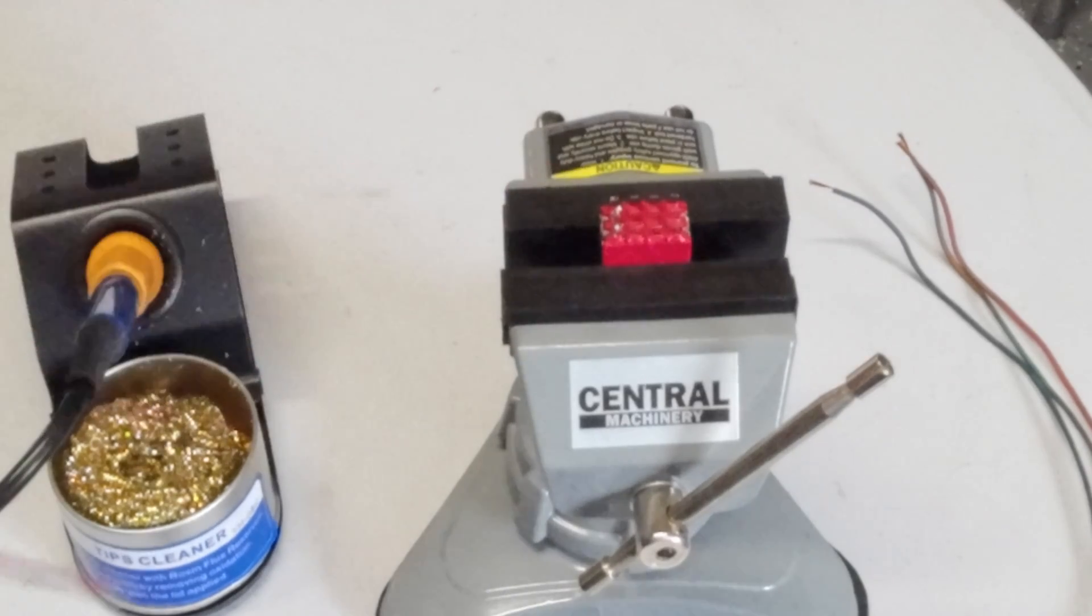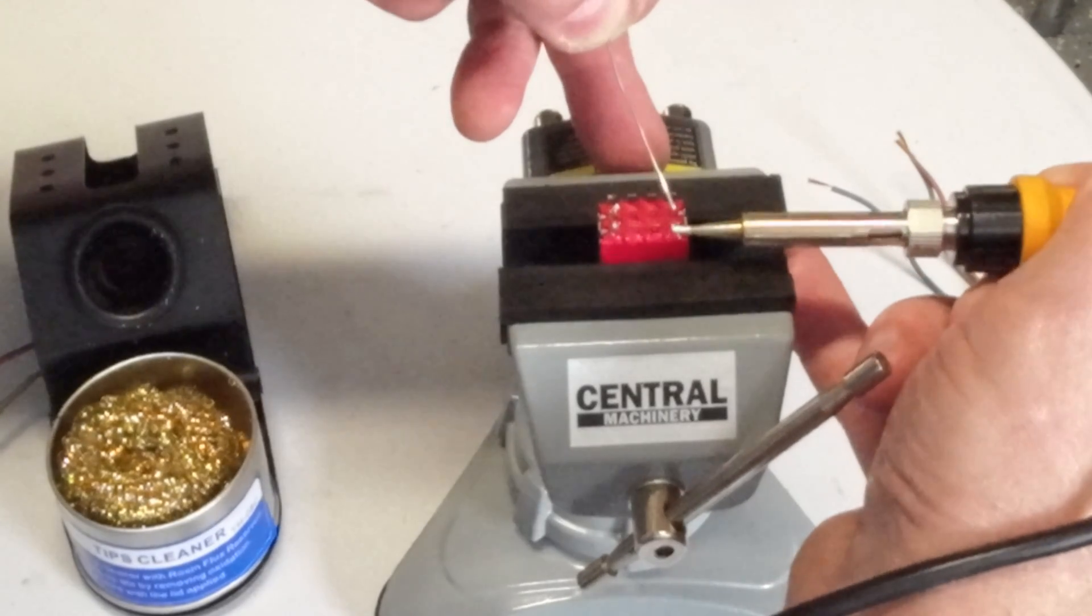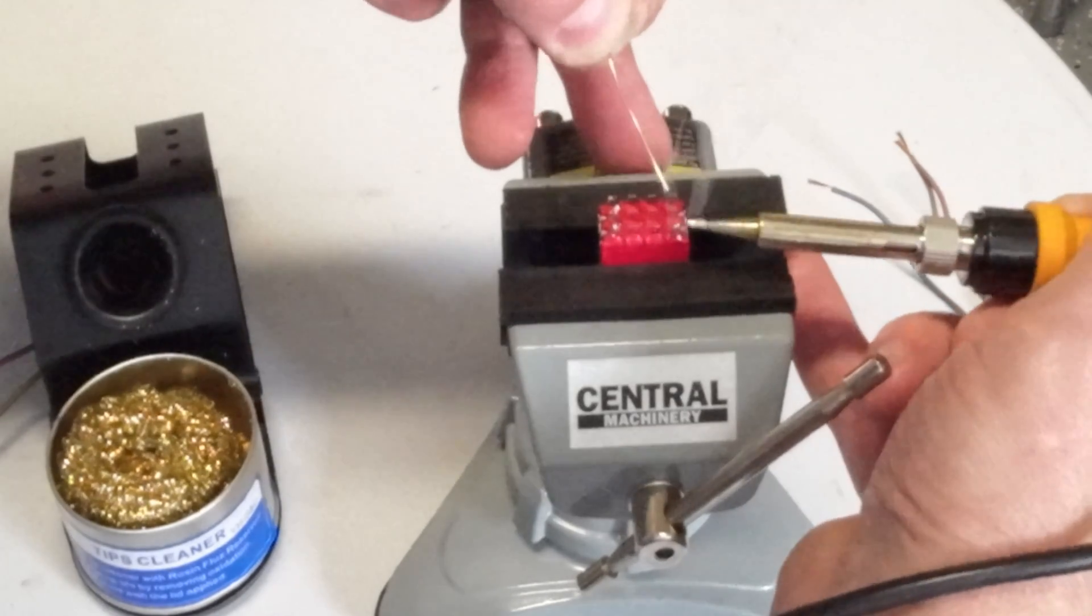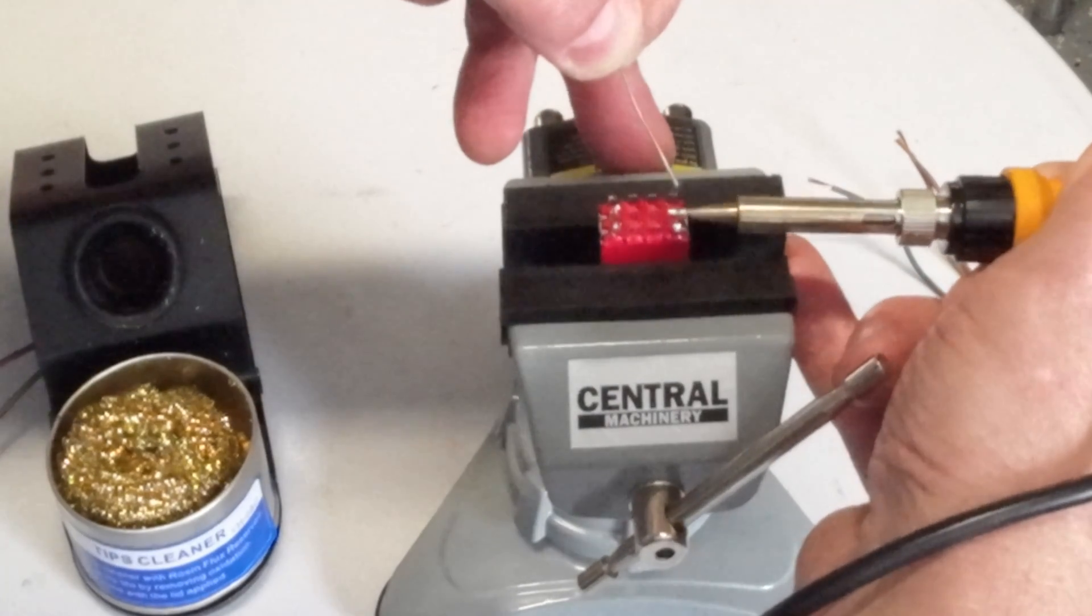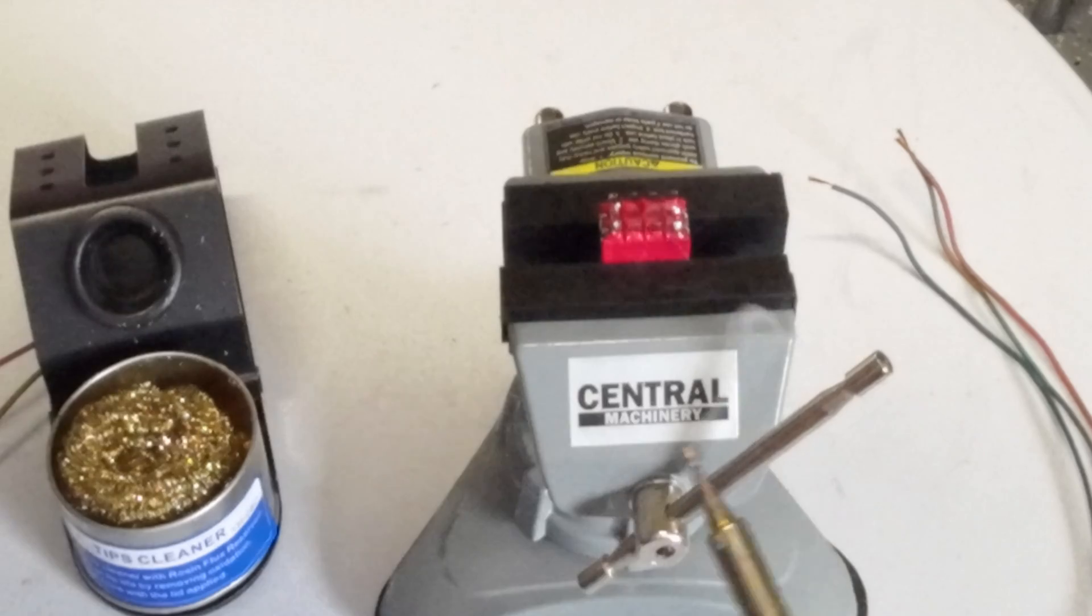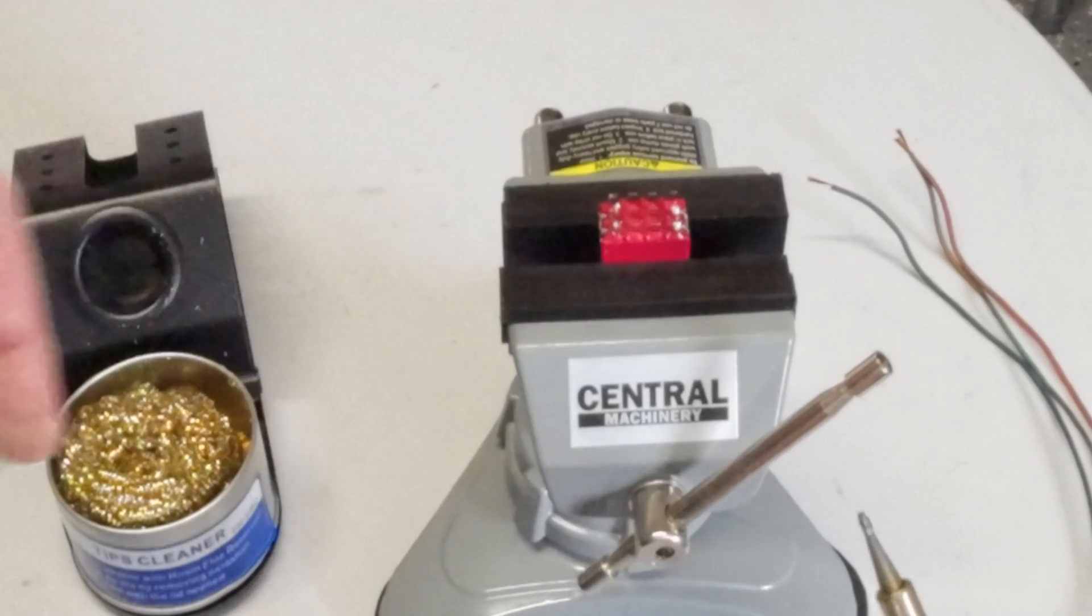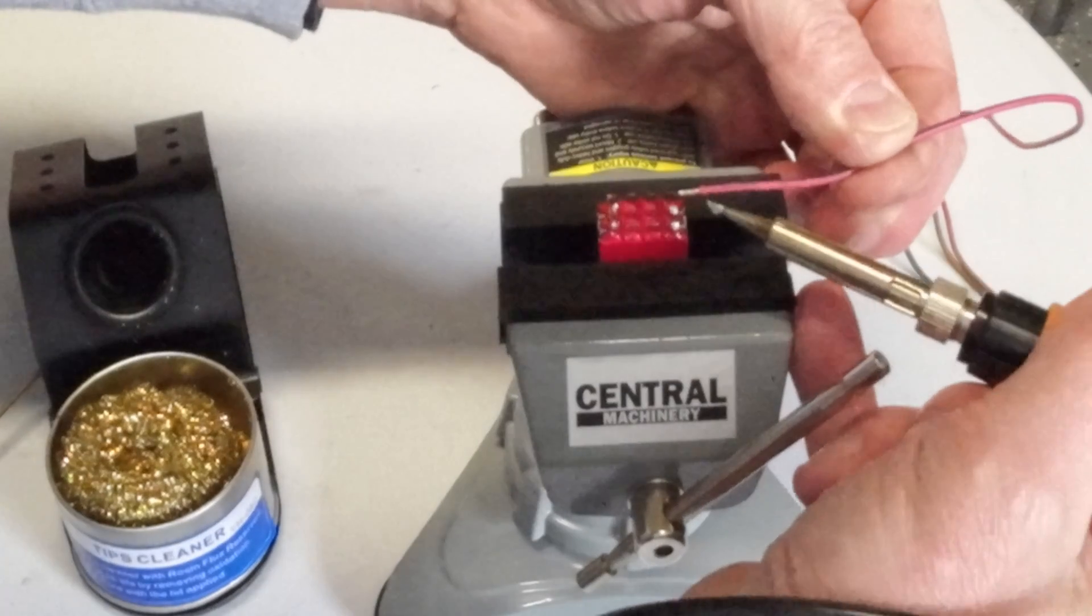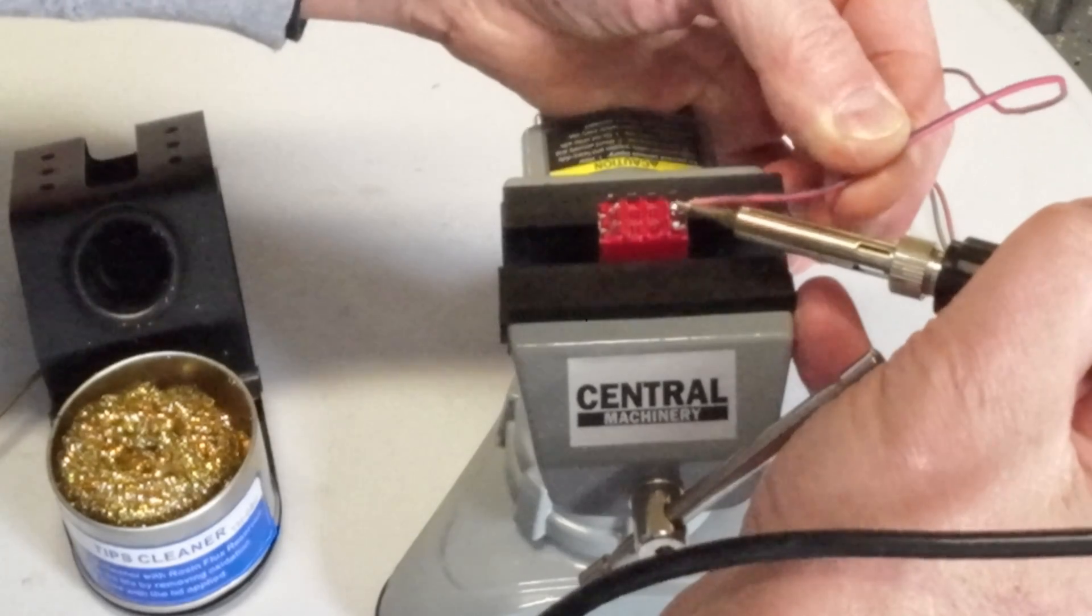I'm going to solder these to the switch. I'm just going to heat the contact up on the switch. You can see it takes a little bit to get that hot enough to melt the solder because, basically, you're heating up the lead. You're not pushing the solder into the iron—you're pushing the solder into the item that's being soldered. Now I've got solder on the wire and on the lead, and I'm going to try to heat both of them up at the same time.